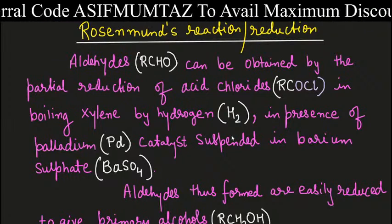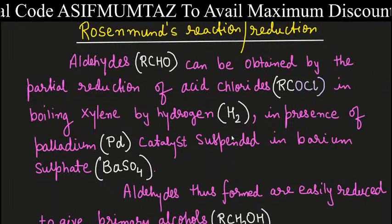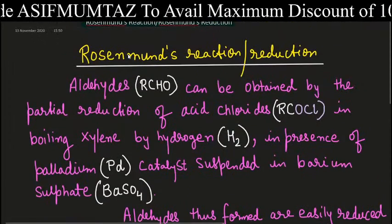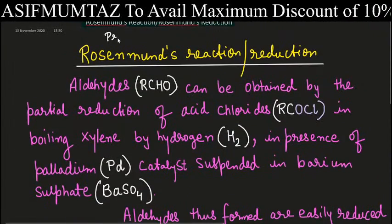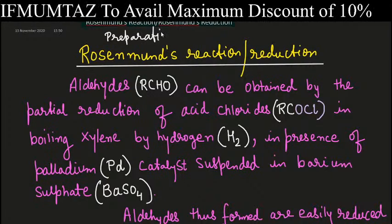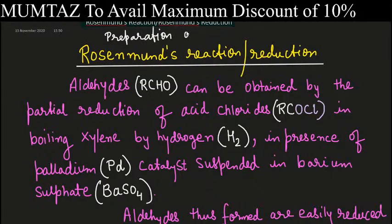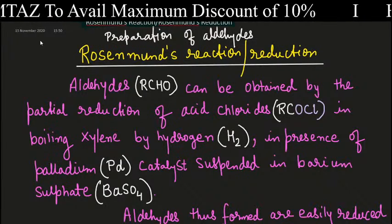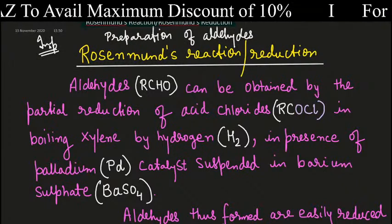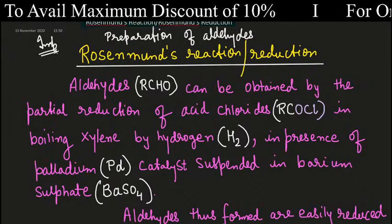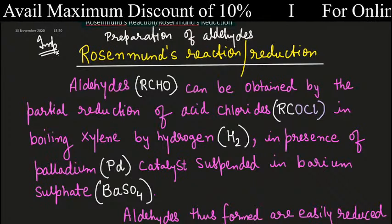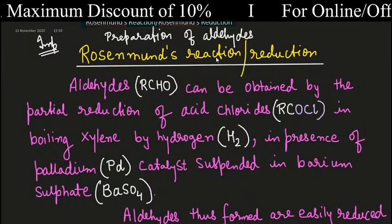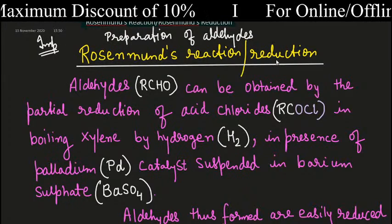Rosenmund reaction and reduction — this is also used for the preparation of aldehyde and ketone. This is a very important reaction. Rosenmund reaction has another name: Rosenmund reduction.